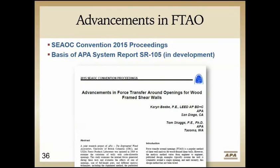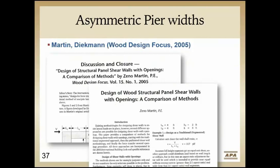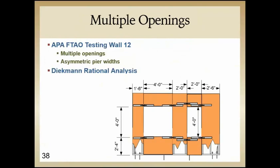Which brings me to the SEAOC paper. Last year, Tom Skaggs — one of our research engineers in Tacoma — and I wrote a paper for the SEAOC convention titled 'Advancements in Force Transfer Around Openings for Wood-Frame Shear Walls.' This really focuses on Wall 12 — the multiple openings, asymmetric piers — and it's also the basis of our upcoming APA System Report SR105, currently in development. Additionally, Wood Design Focus articles by Zeno Martin shed light on the different analysis techniques, and Ed Diekmann wrote a response to Zeno's original article with his own rational analysis approach, and was kind enough to provide us with design results for Wall 12 as well.